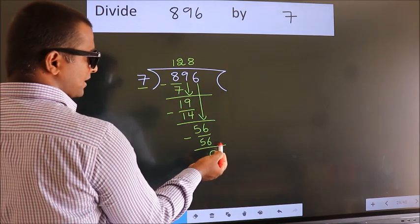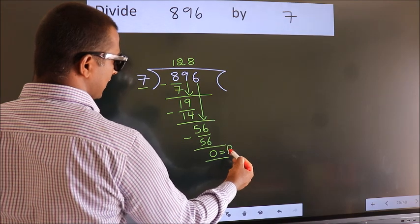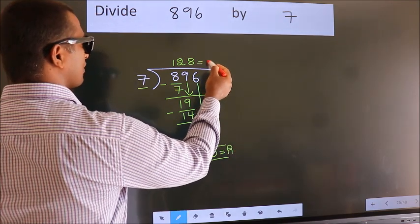No more numbers to bring down, so we stop here. This is our remainder. This is our quotient.